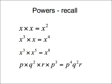If you get your letters in a different order but with the same powers, it doesn't really matter. Because 3 times 4 is 12, and 4 times 3 is 12.